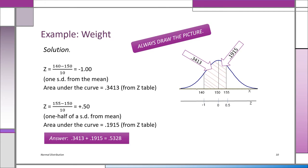Adding 0.3413 plus 0.1915 gives 0.5328. The probability that an individual male chosen at random will weigh between 140 and 155 pounds is 0.5328 — in other words, 53.28% of the population will be in that interval.